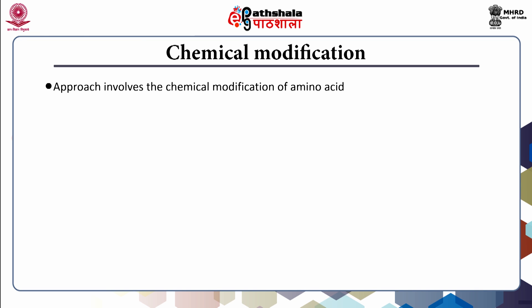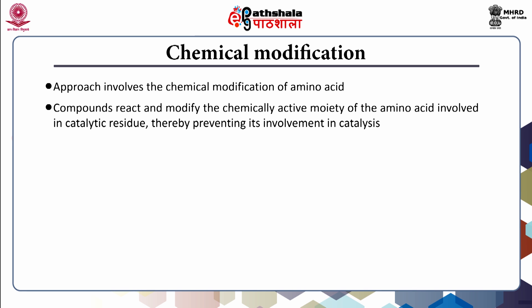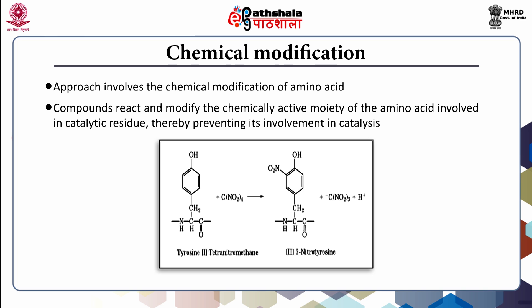The chemical modification approach involves the chemical modification of amino acids. There may be one or more compounds available which can react and modify the chemically active moiety of the amino acid involved in the catalytic residue, thereby preventing its involvement in catalysis. For example, if the active site of an enzyme has tyrosine involved, the compound tetranitromethane will react with the phenol group of tyrosine, thus nitrating it. If the enzyme is inactivated by tetranitromethane treatment, this suggests that it may have tyrosine as a catalytic residue. However, this may also imply that tyrosine may be involved in substrate binding or may lie closer to the active site. Affinity labelling is a more specific chemical modification method which involves attaching a chemically reactive group to a substrate analogue. This substrate analogue is bound in the active site and then chemically modifies a residue at the active site, physically blocking catalysis.